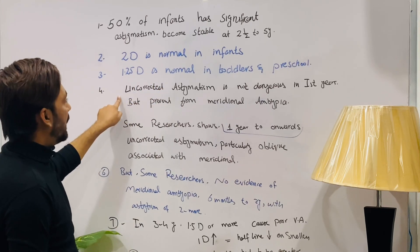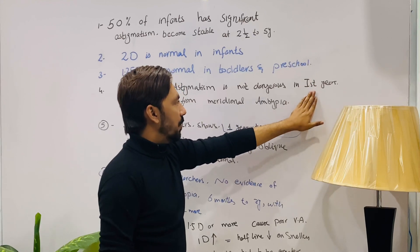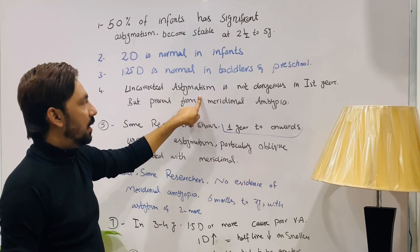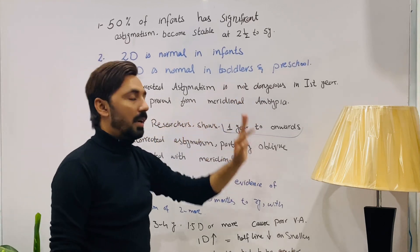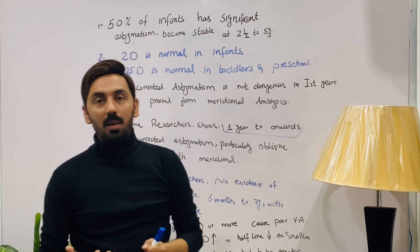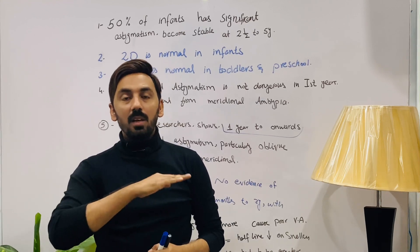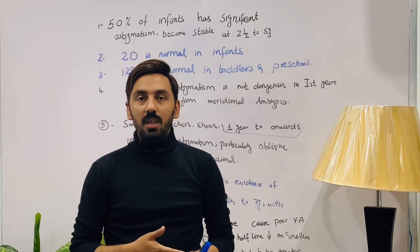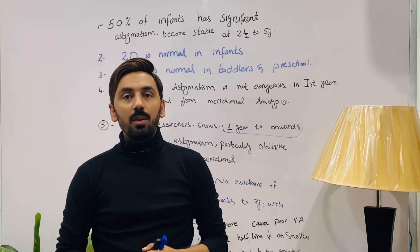Uncorrected astigmatism is not dangerous in the first year of life. We do not need to correct astigmatism in infancy, but we must prevent meridional amblyopia. In astigmatism there are two principal meridians — the axis meridian and the power meridian — and prescribing a wrong power or wrong axis can cause meridional amblyopia.